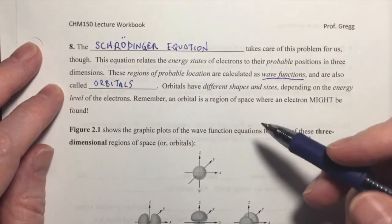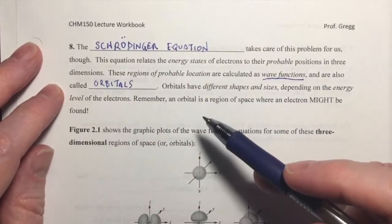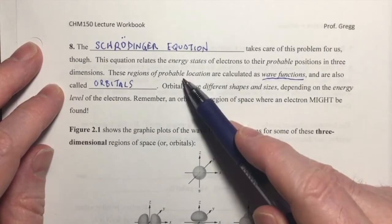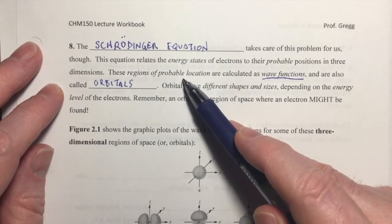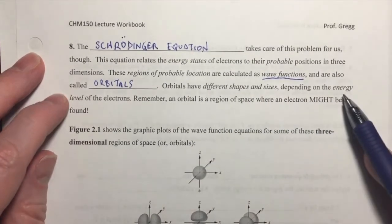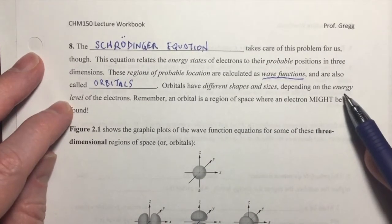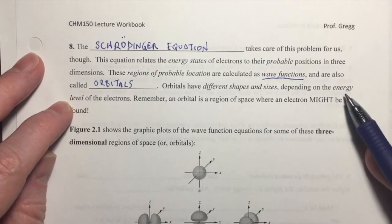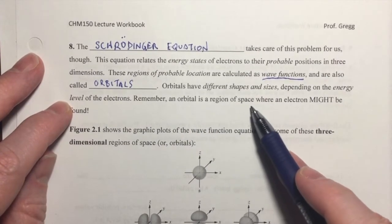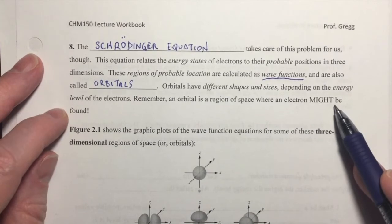So, an electron's orbital is a region in space, a three-dimensional region, in which you will probably find the electron. So, orbitals have different shapes and sizes depending on their energy levels. So, n equals 1, n equals 2, they have different shapes and sizes. And remember, when we're talking about these orbitals, they're a three-dimensional region of space where an electron might be found.